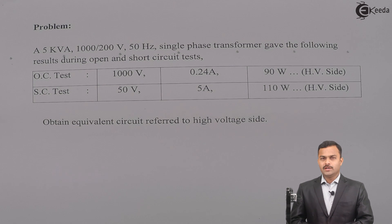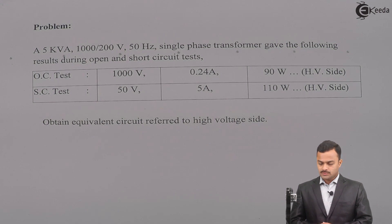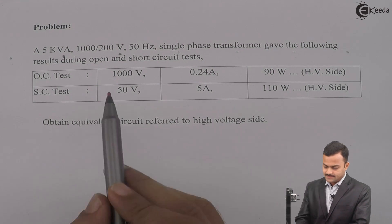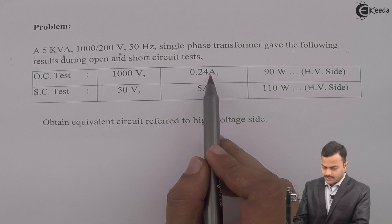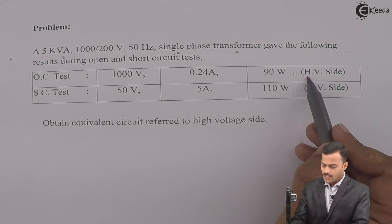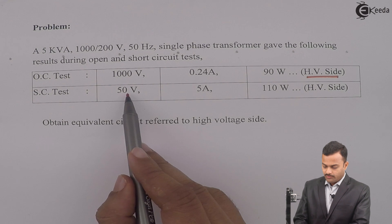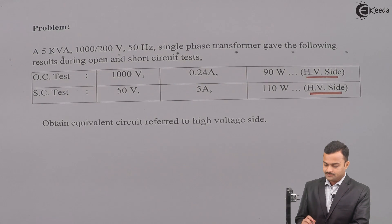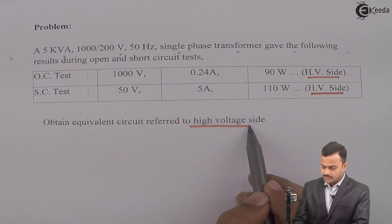Hi friends. In this video we are going to see a problem where the equivalent circuit diagram of a transformer is obtained from OC and SC test results. The problem statement is: a 5 kVA, 1000/200 volt, 50 Hz single-phase transformer gave the following results during open circuit and short circuit tests. OC test: 1000 V, 0.24 A, 90 W, performed on the high voltage side. SC test: 50 V, 5 A, 110 W, performed on the HV side. Obtain the equivalent circuit diagram referred to the high voltage side.